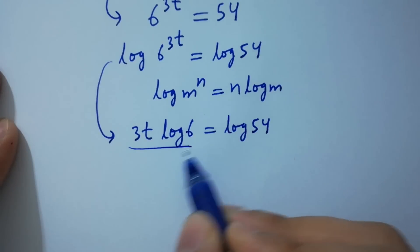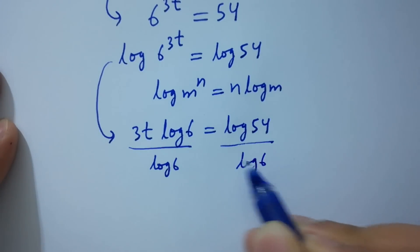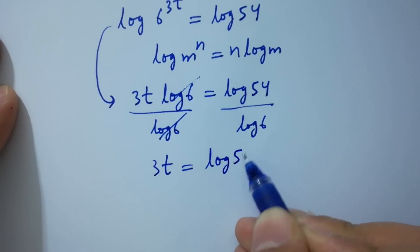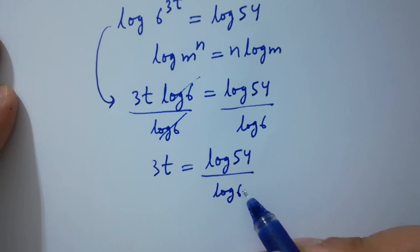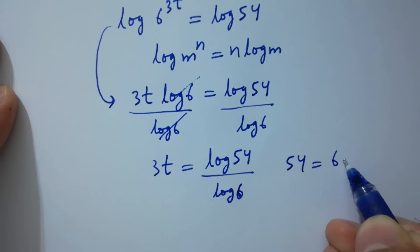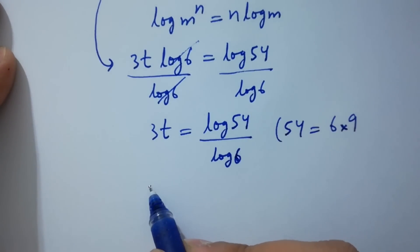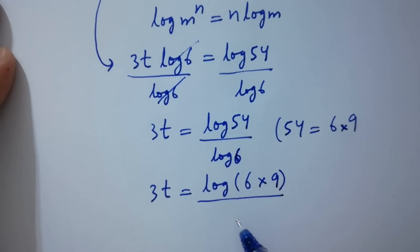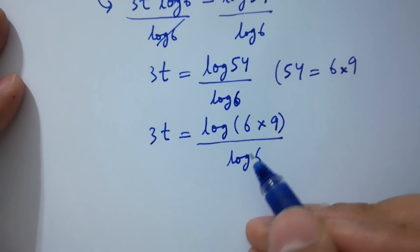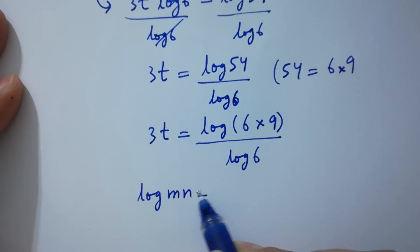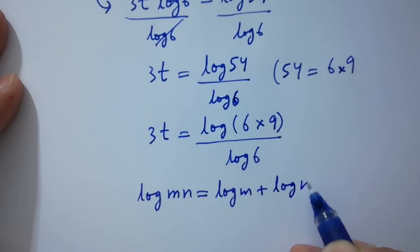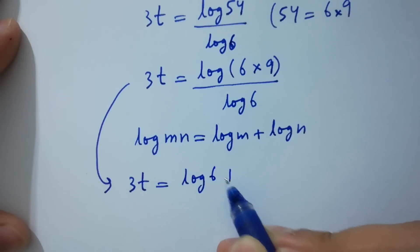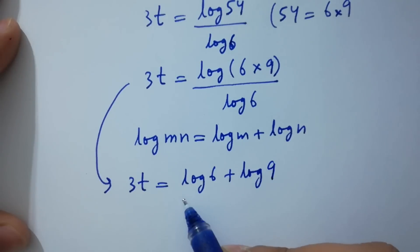Dividing both sides by log 6, log 6 and log 6 cancel. So 3t equals log 54 over log 6. Since log 54 equals log of 6 times 9, we have 3t equal to log(6 times 9) over log 6.